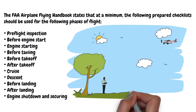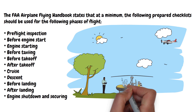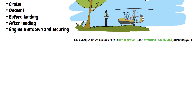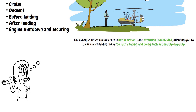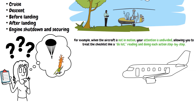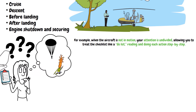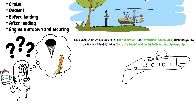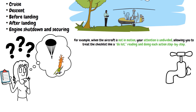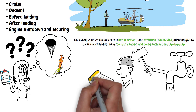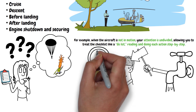Each phase of flight has varying levels of workload. One phase of flight might be busier than another, requiring a different approach to how the checklist is used. For example, when the aircraft is not in motion, your attention is undivided, allowing you to treat the checklist like a do list, reading and doing each action step by step. However, the read-do method is not usually appropriate while the airplane is in motion, especially if you lack an autopilot or co-pilot.